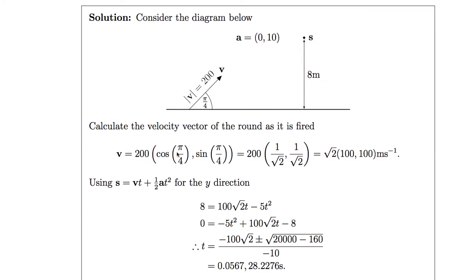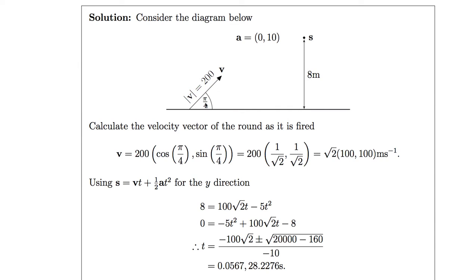First, we calculate the velocity vector V using trigonometric identities. The x-component is the adjacent over hypotenuse, giving 200 times cosine of the angle. The y-component is the opposite over hypotenuse, giving 200 times sine of the angle. Since cosine and sine of pi over 4 are both 1 over root 2, we can simplify: Vx = 100√2 and Vy = 100√2.